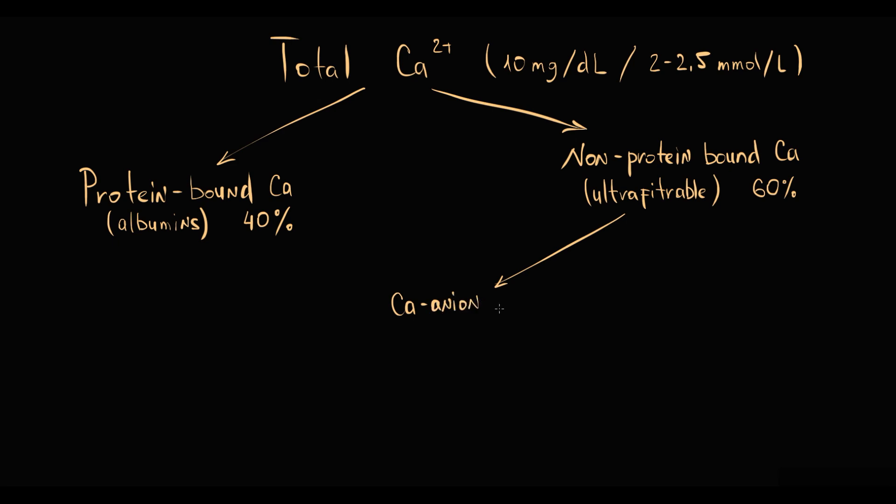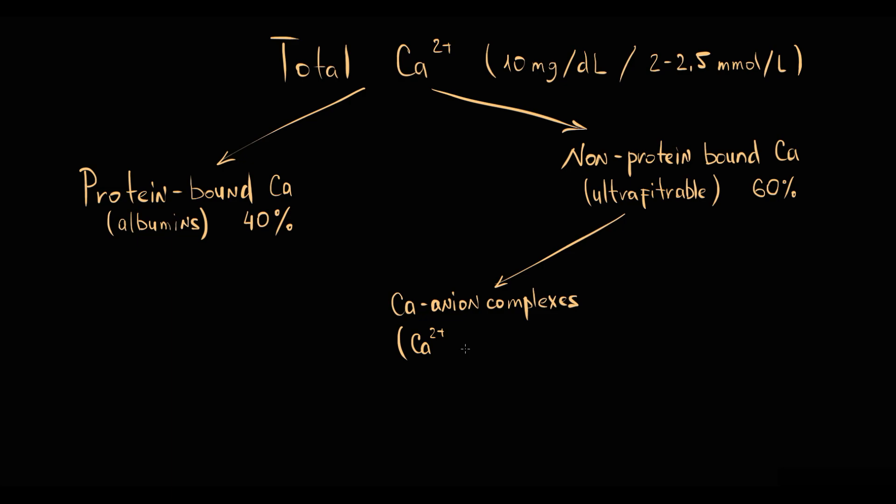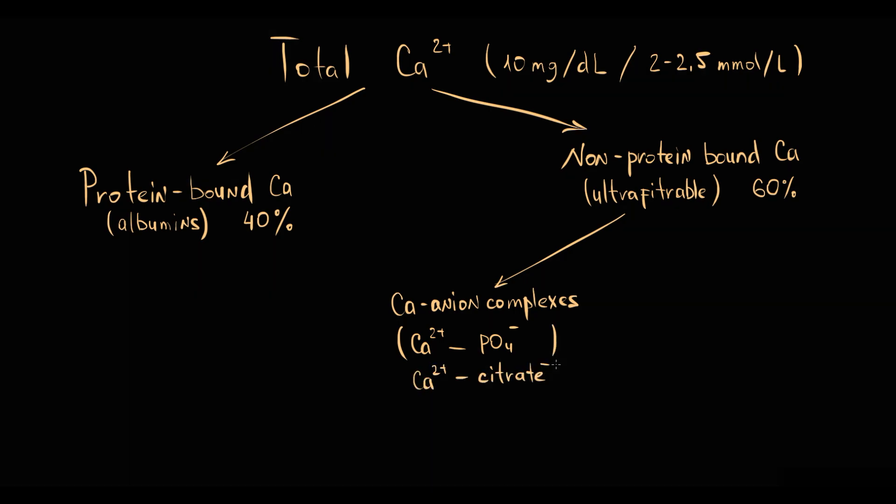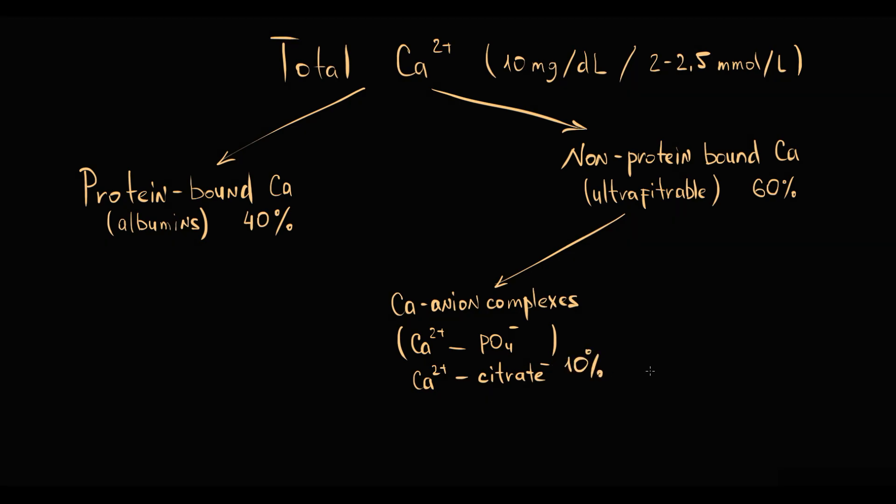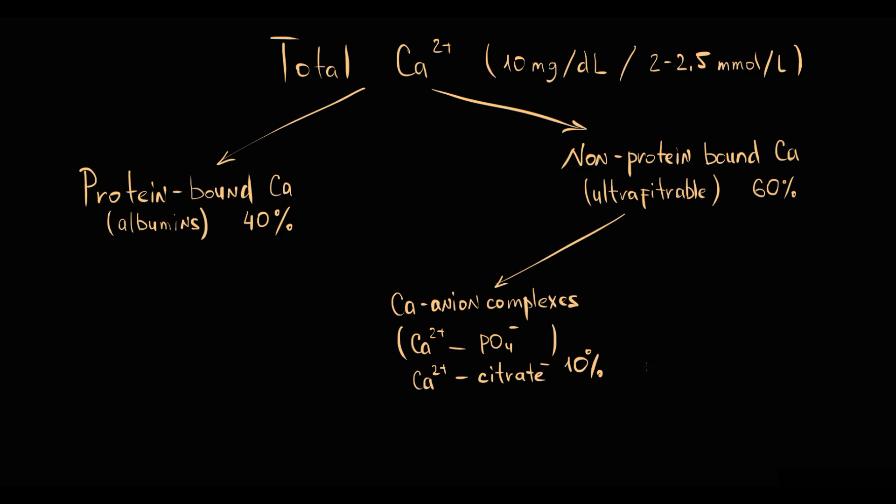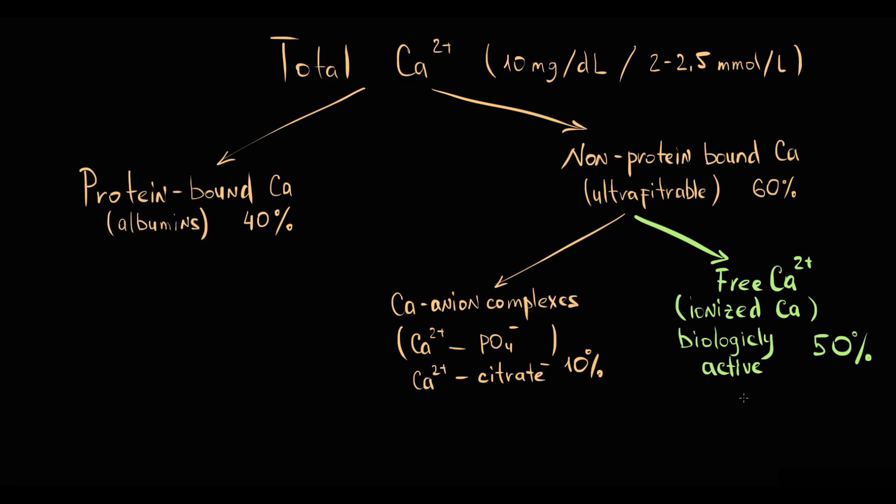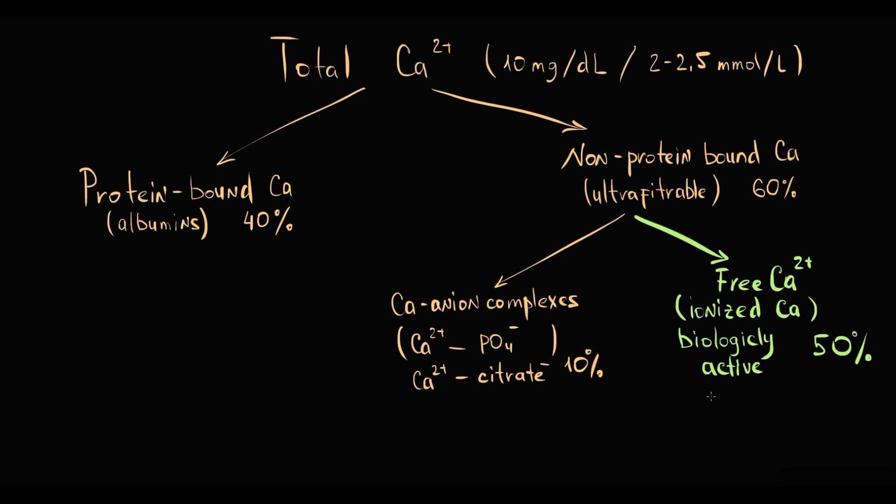From this 60% of ultrafilterable calcium, the minor portion of calcium exists in the blood in complexes with anions. Because calcium is a positively charged ion, in the blood it can bind to negatively charged anions such as phosphate or citrate, with formation of calcium complexes. From total blood calcium, 10% is present in the blood in complexes with anions. But the majority of calcium in the blood is present as free calcium, also called ionized calcium. And only ionized calcium is biologically active. 50% of total calcium in the blood is ionized. All clinical symptoms due to hypocalcemia or hypercalcemia are caused by alterations in the level of ionized calcium. The normal level of ionized calcium is 1.16 to 1.32 millimoles per liter.